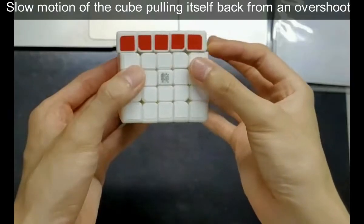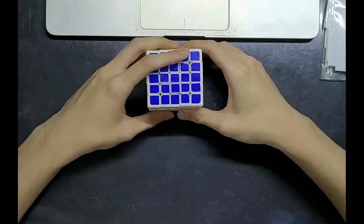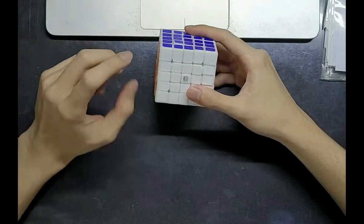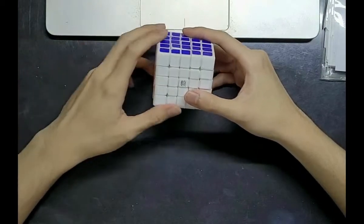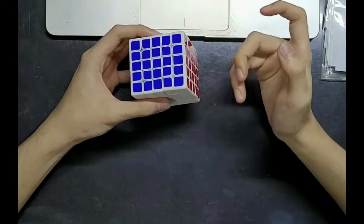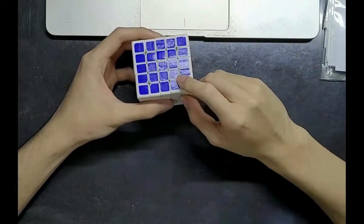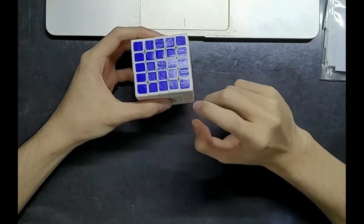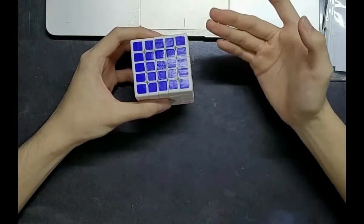Secondly, as pointed out by Cubicle, varying the distance between core magnets and corner magnets can manipulate how strong the magnetic snap is. And thirdly, there's an extra suction force that pulls the corners inwards towards a preferred position that is defined relative to the core.